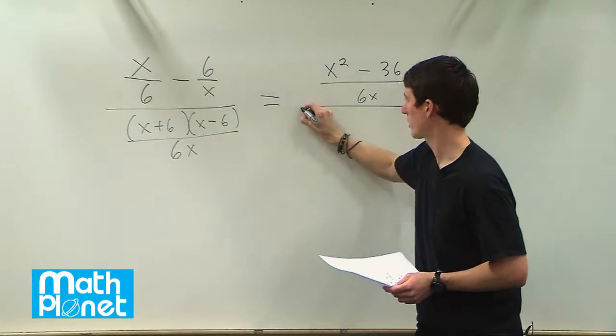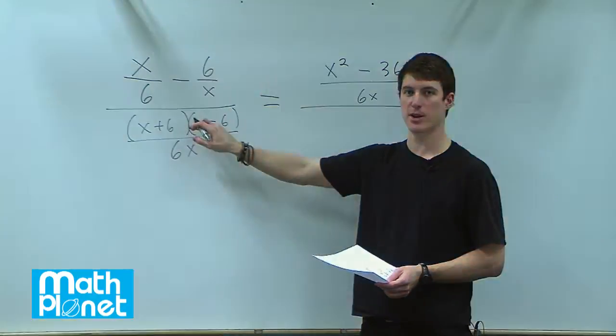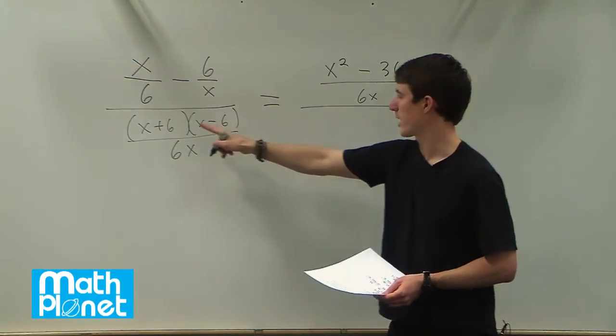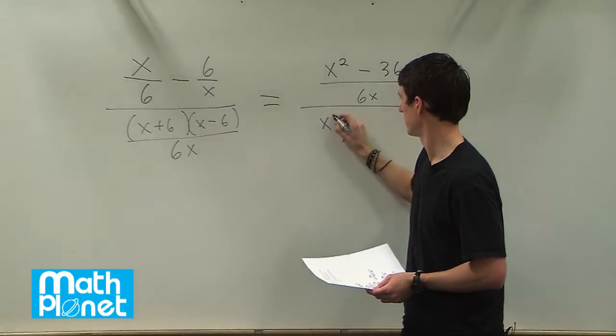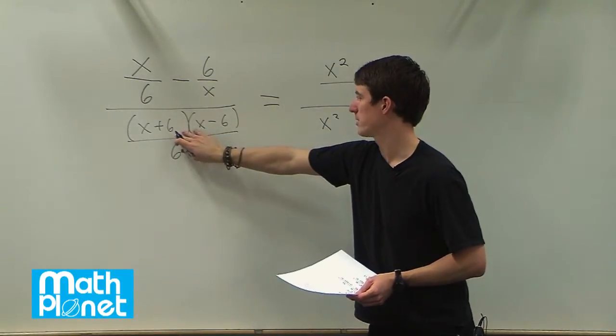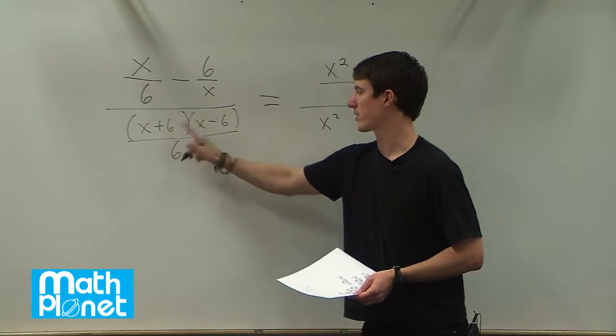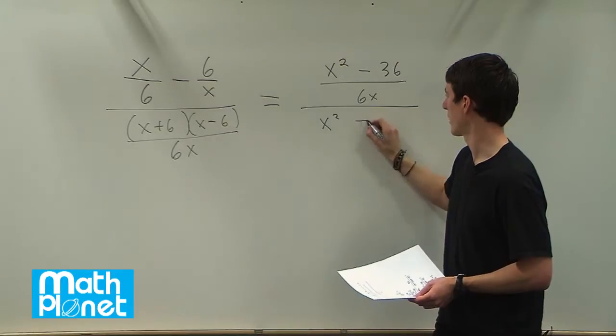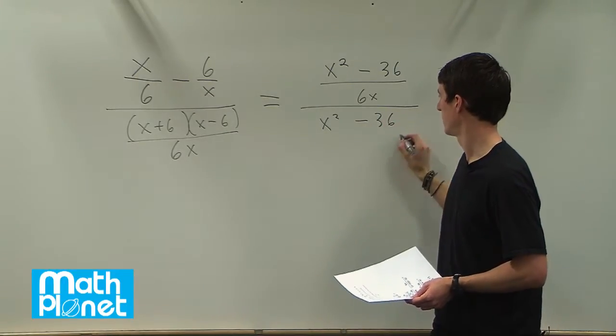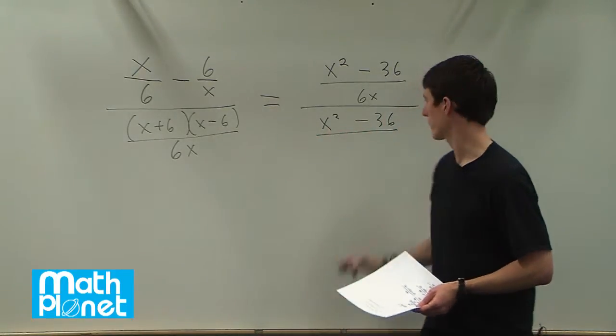So there's our numerator. Now our denominator, we can multiply this out and see what we get. So we're going to have an x squared, a 6x minus a 6x, so the cross terms cancel. These are conjugates, and then 6 times negative 6, so minus 36, and this is still over 6x.